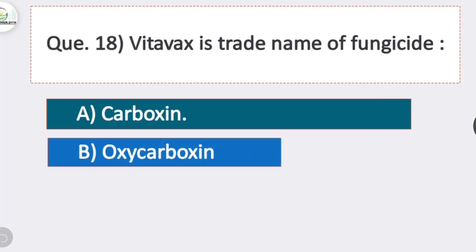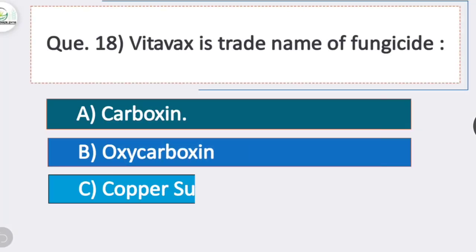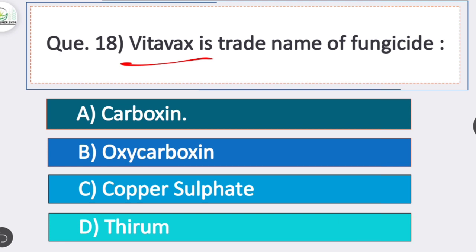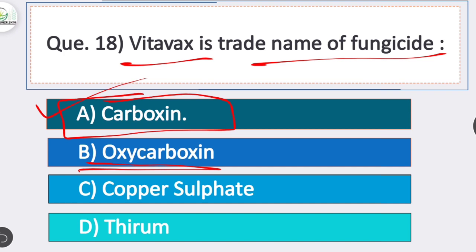Question 18: Vitavax is the trade name of which fungicide? Option A is correct — carboxin. Vitavax is the trade name of carboxin, and Plantvax is the trade name of oxycarboxin.